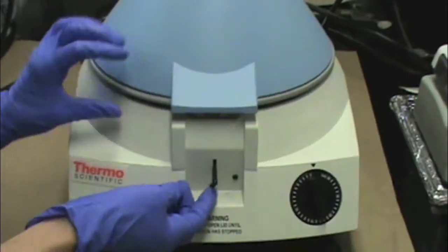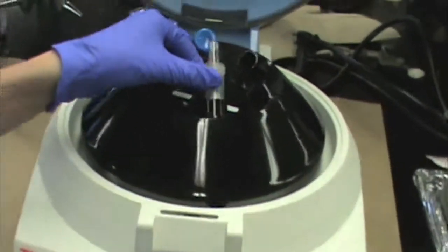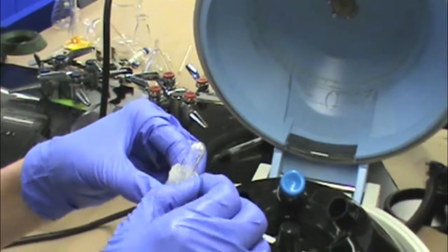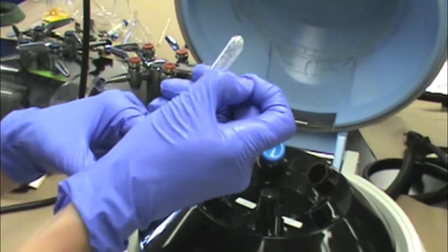When you are finished and the centrifuge has stopped spinning, open it up and you will see that your solid has transferred to the bottom. Use your copper wire to pull out the setup.